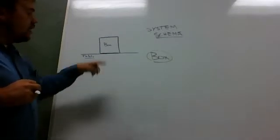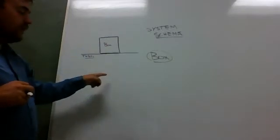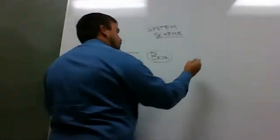Additionally, I know that the box is in direct contact with the table. So I'm going to write table in a circle.